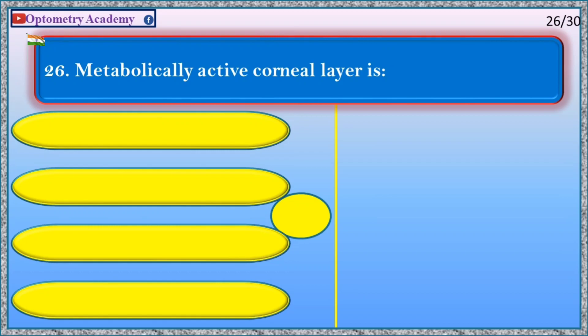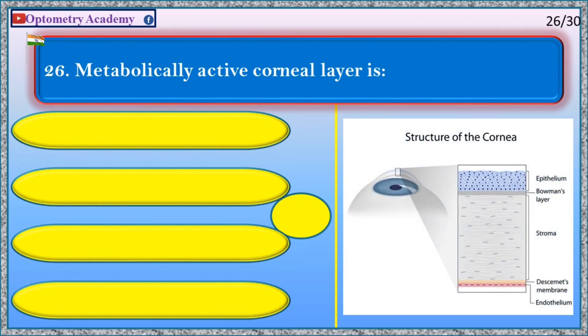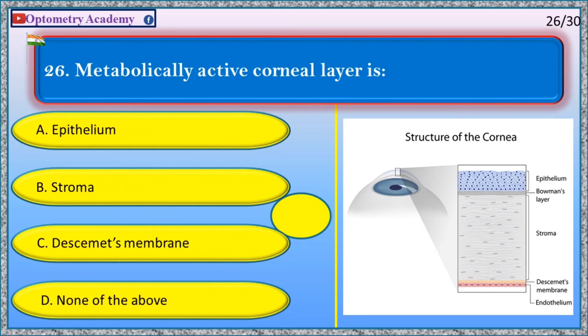Metabolically active corneal layer is: A. Epithelium, B. Stroma, C. Descemet's membrane, D. None of the above.